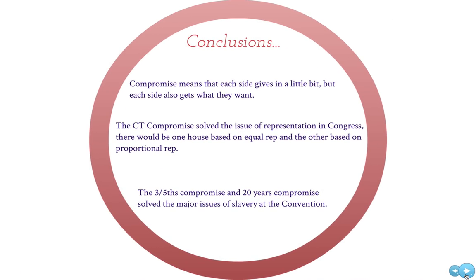To conclude, compromise means that each side gives a little bit but still gets some of what they want. Over the issue of representation in Congress, the small states got equal representation in half of Congress — the Senate — and the large states got proportional representation in the other half — the House. This was a true compromise, called the Connecticut Compromise because it was proposed by Roger Sherman of Connecticut.